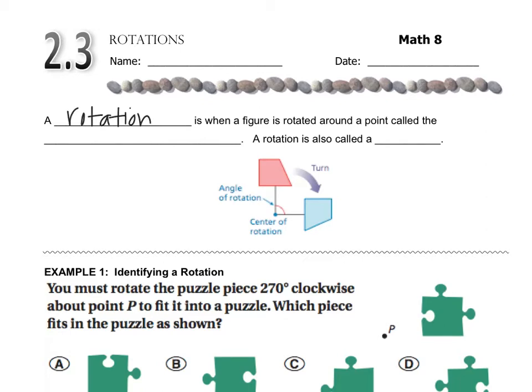A rotation is when a figure is rotated around a point called the center of rotation, and a rotation is also called a turn. You can see all that information is in the picture underneath.